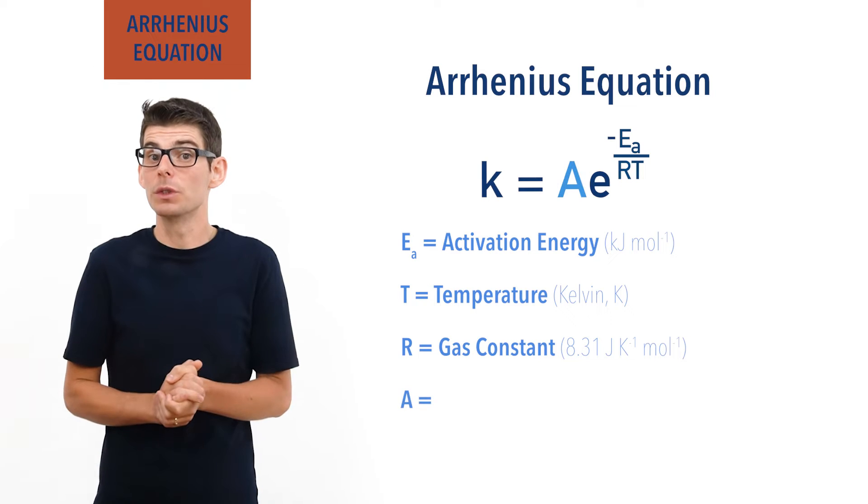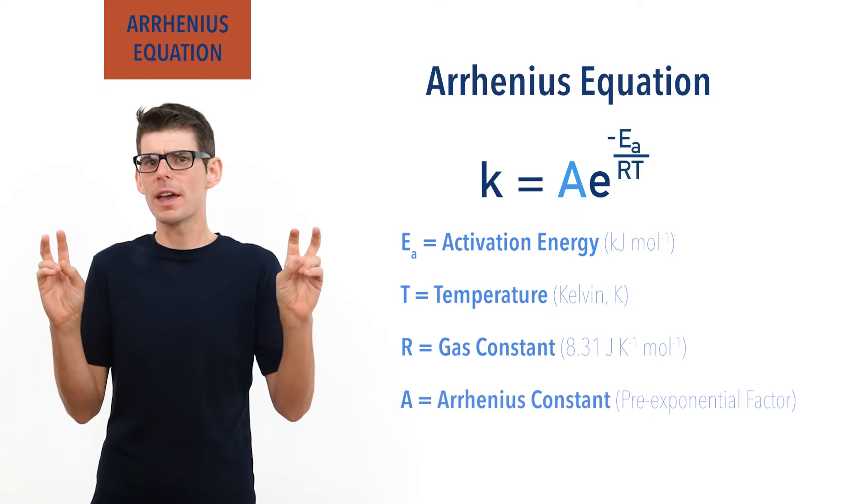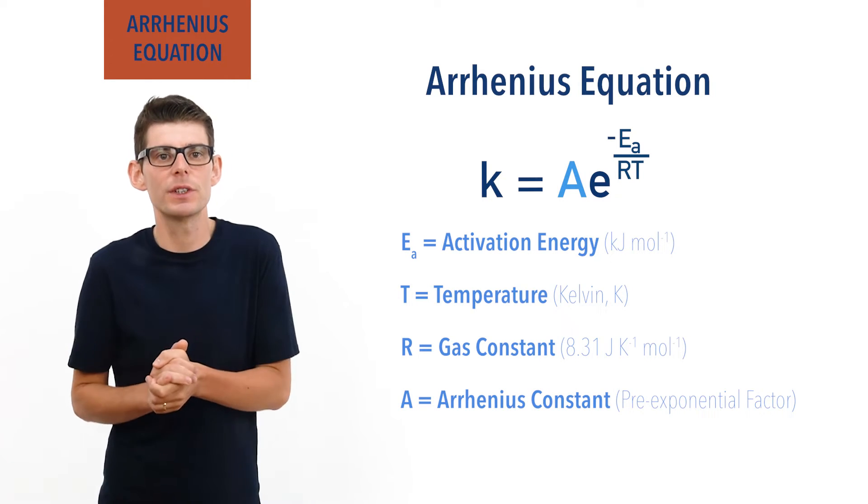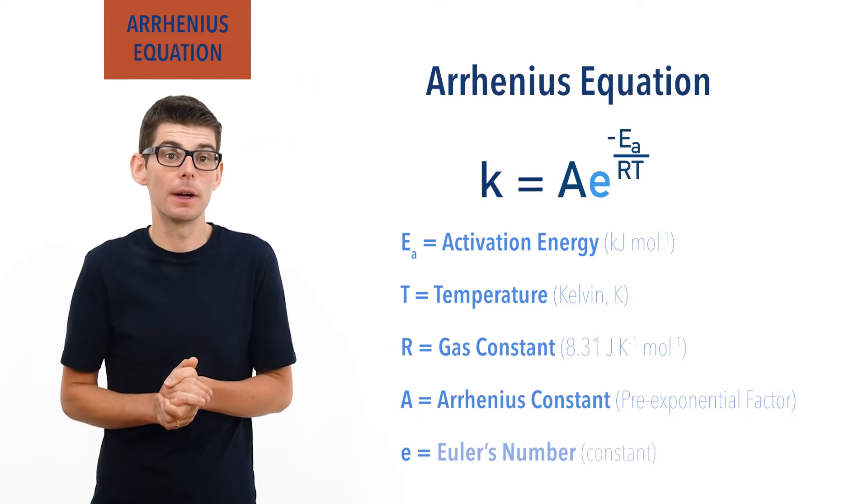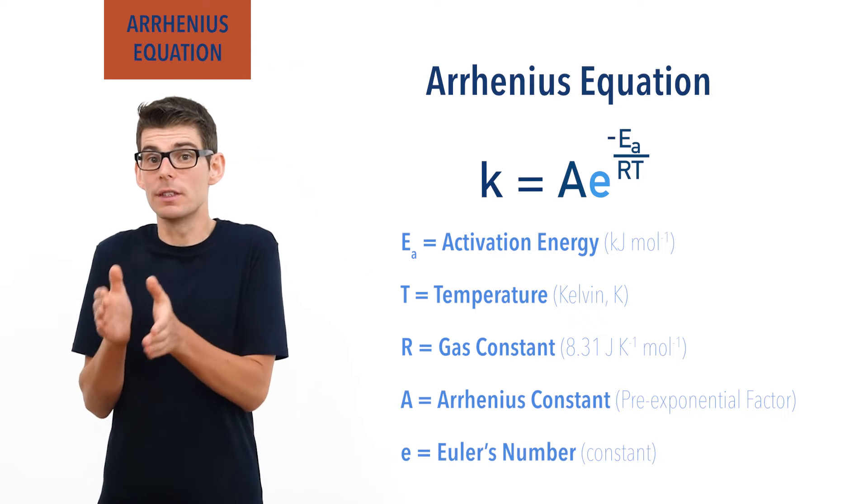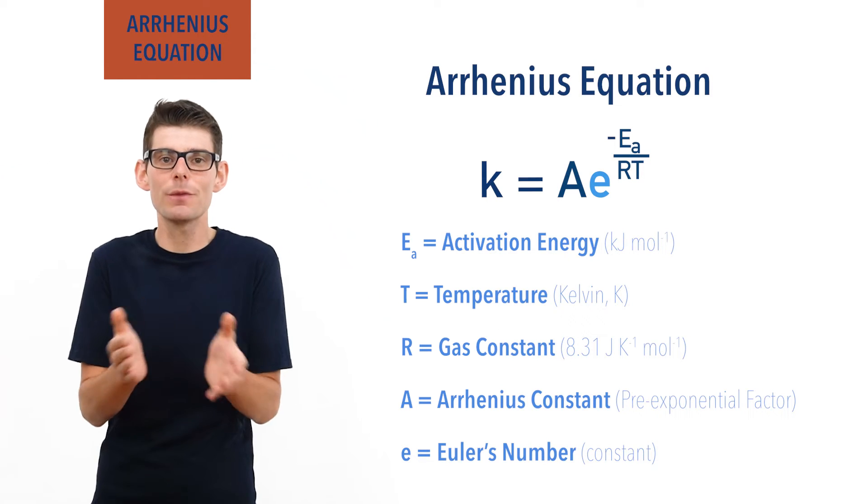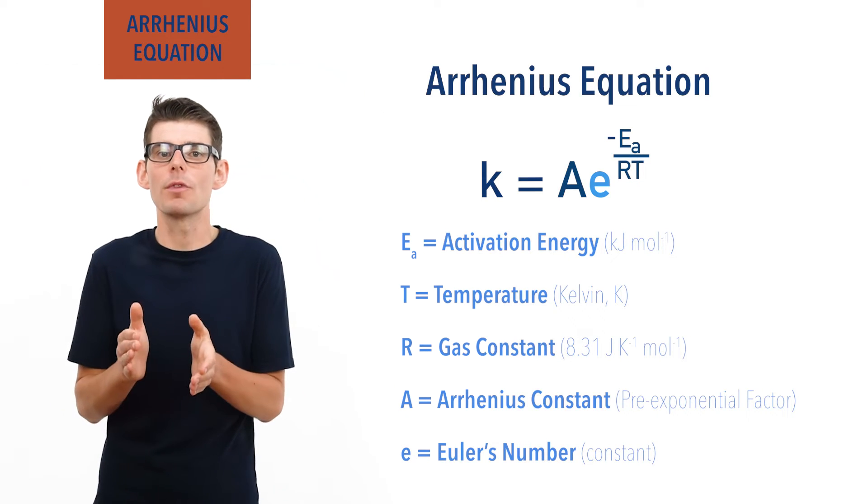A is something called the Arrhenius constant or pre-exponential factor and can have different units for different reactions. And e is something called Euler's number - it's literally just a number, however as it has an infinite number of decimal places we write it as e.